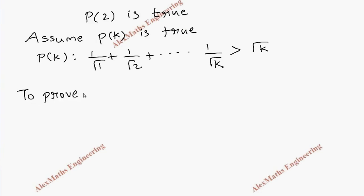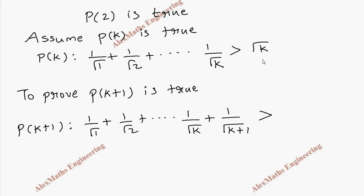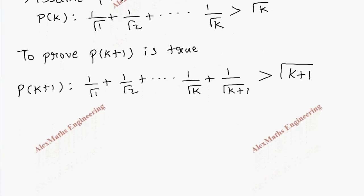As the next step, we are going to prove P(k+1) is true. The expression for P(k+1) is 1/√1 + 1/√2 + ... + 1/√k + 1/√(k+1) > √(k+1), where k is replaced with k+1.